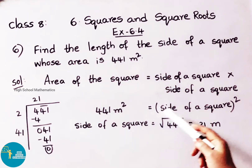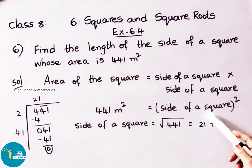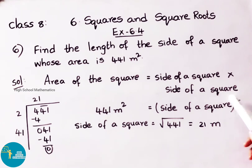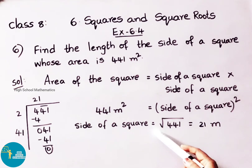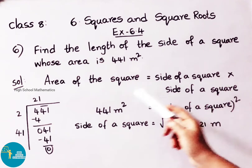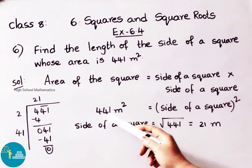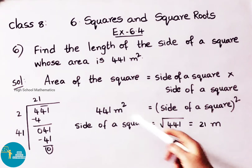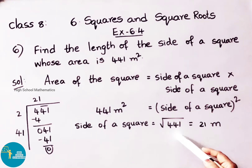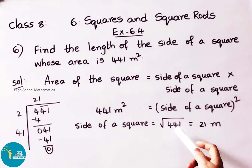That equals to side of a square whole square. So side of a square equals to, on transposing it becomes square root, so square root of 441. Now we have to find the square root of the number 441.